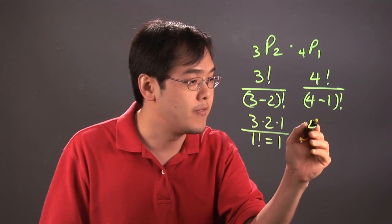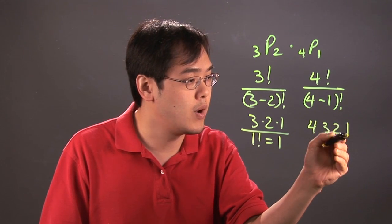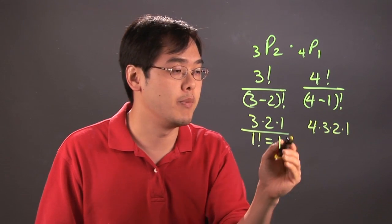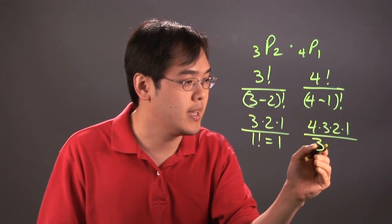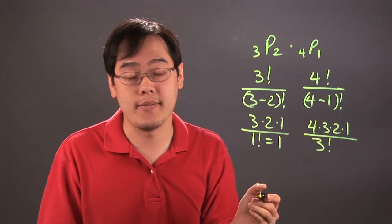Now 4 factorial is 4·3·2·1 with the numbers multiplied together, and then (4-1) factorial is going to be 3 factorial. We'll expand that very shortly.